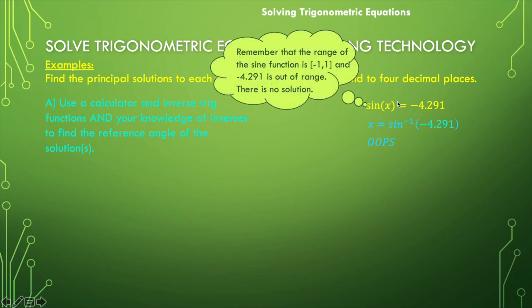And it will say something like domain error. And that's because, remember that the range of the sine function is from negative 1 to positive 1. And negative 4.291 is out of range. There's no angle that has a sine value that's negative 4.291.